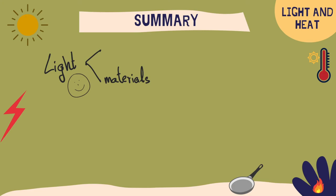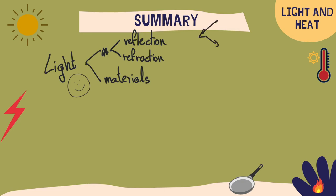In summary, light is the form of energy that makes it possible for us to see. We have to know about reflection and refraction. Reflection is when light comes from one direction and it bounces back, creating a reflection of the object, like mirrors or an image on a lake or a river. And refraction is when you change substance and they have different densities.